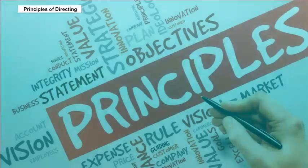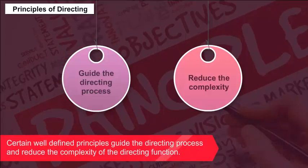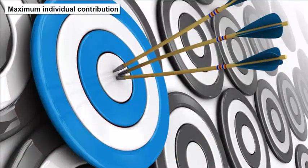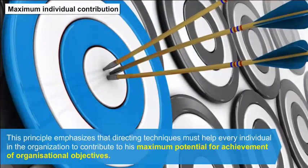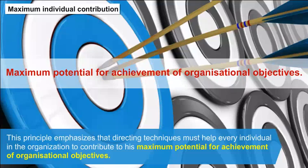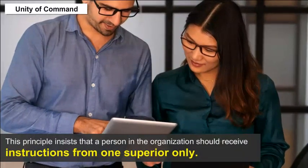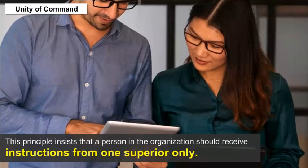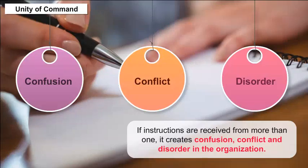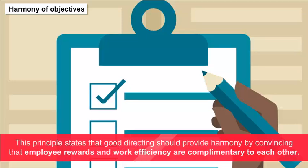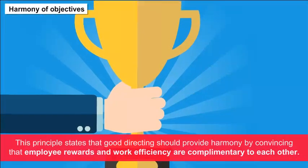Principles of Directing: Certain well-defined principles guide the directing process and reduce its complexity. Maximum Individual Contribution: Directing techniques must help every individual contribute to their maximum potential for achievement of organizational objectives. Unity of Command: A person in the organization should receive instructions from one superior only. If instructions are received from more than one, it creates confusion, conflict and disorder. Harmony of Objectives: Good directing should convince employees that rewards and work efficiency are complementary to each other.